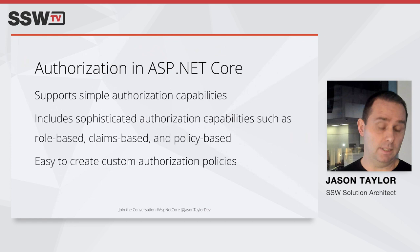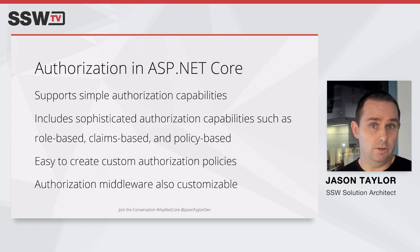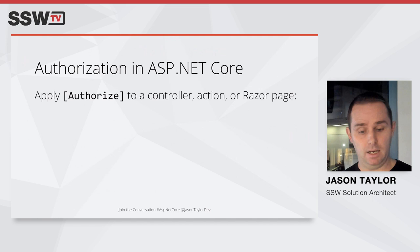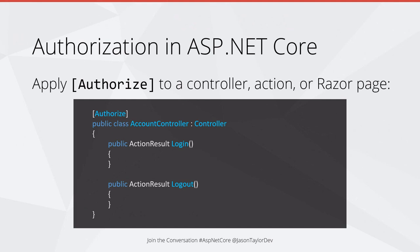Let's have a look at the basics so we're all on the same page. In its simplest form, authorization in ASP.NET Core works by applying an Authorize attribute to a controller, action, or page. In this example, we've applied the Authorize attribute to the account controller, meaning anyone who wants to access actions within it will need to be authenticated — the minimum level of authorization.